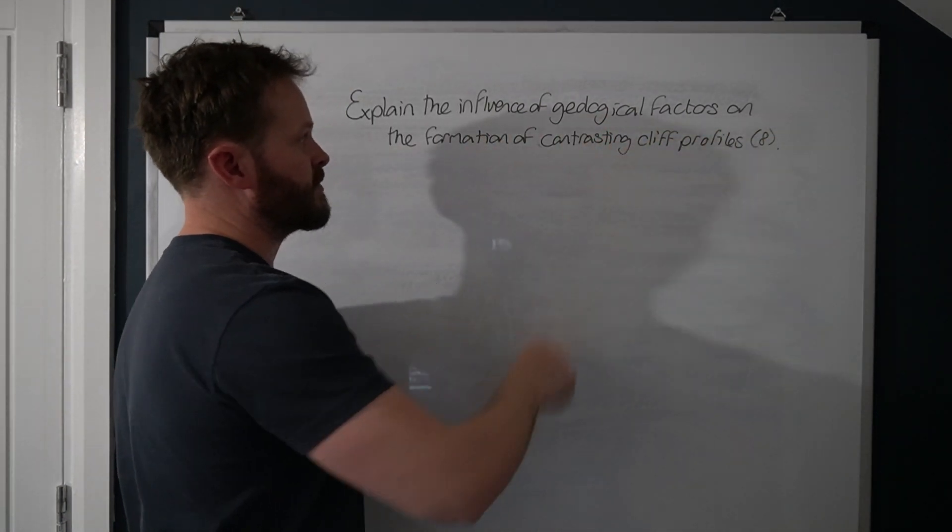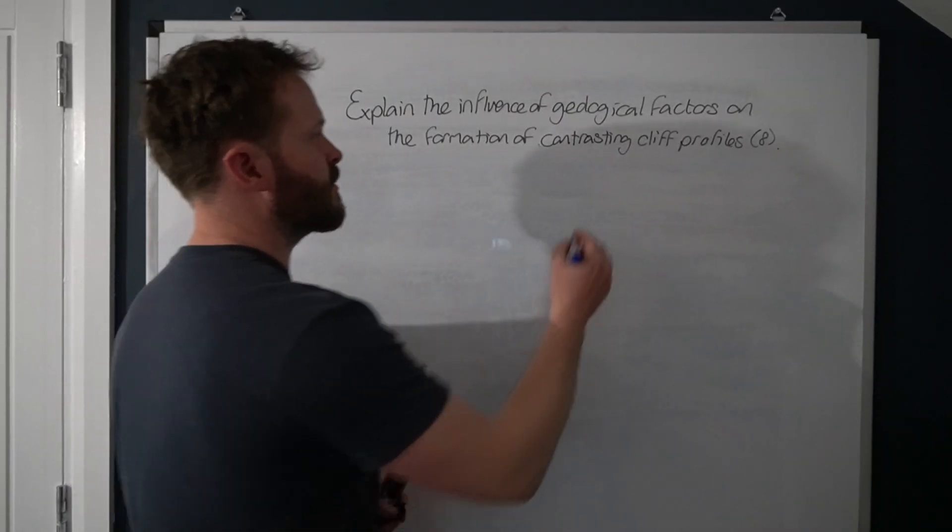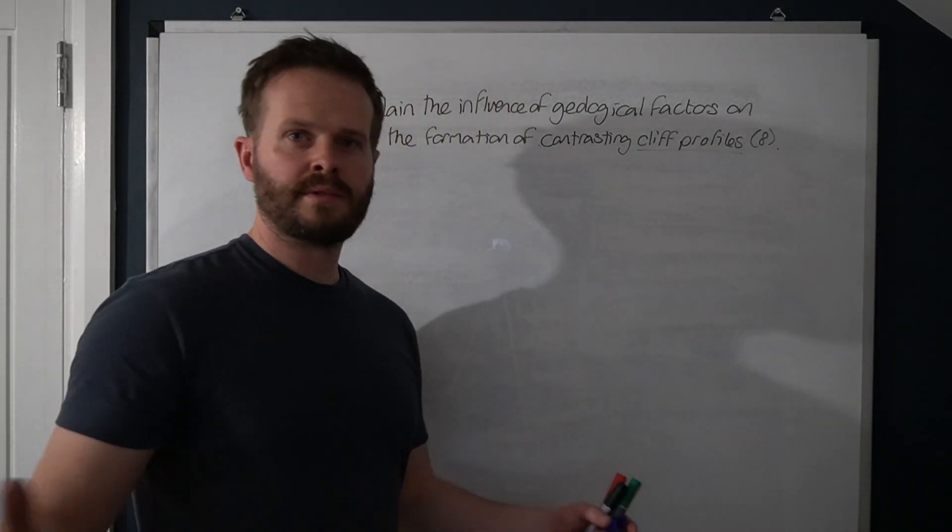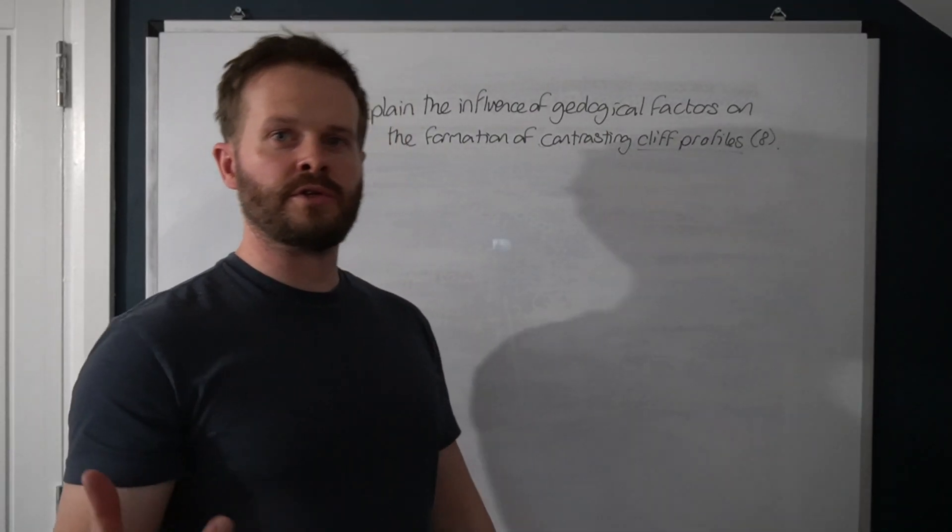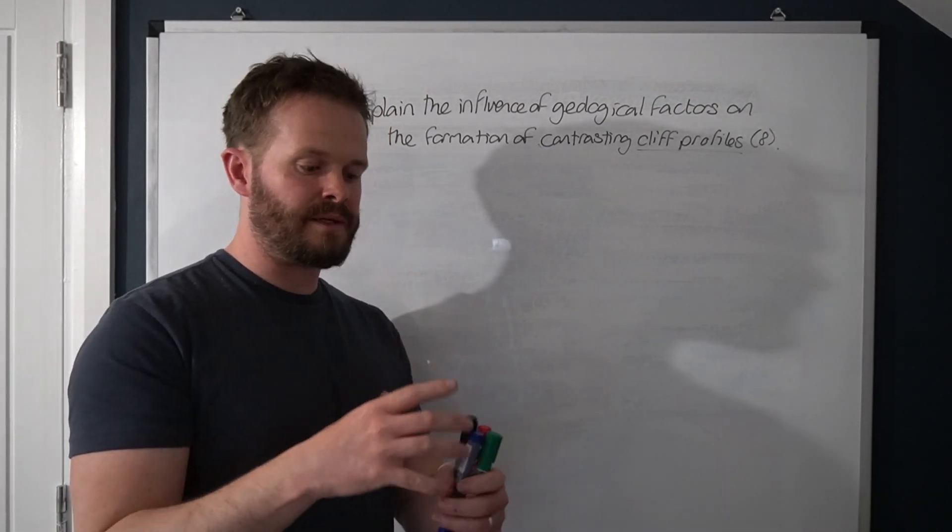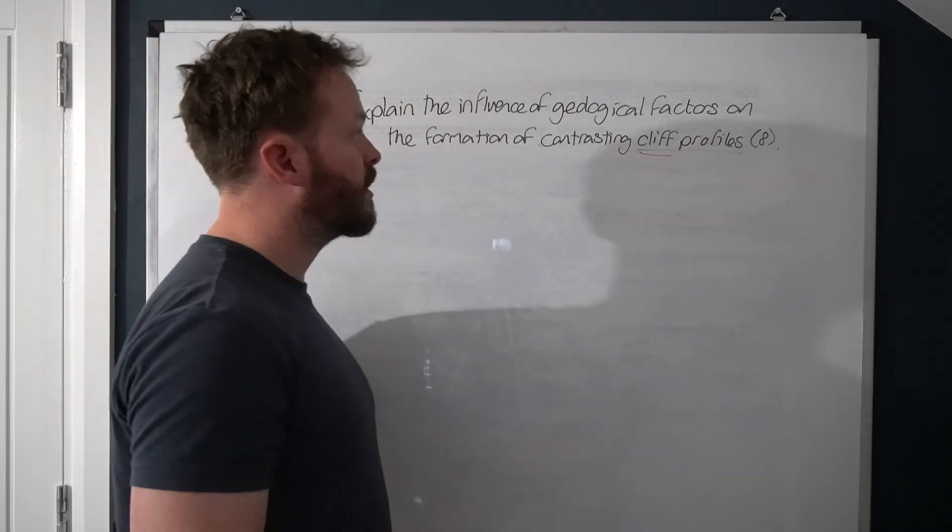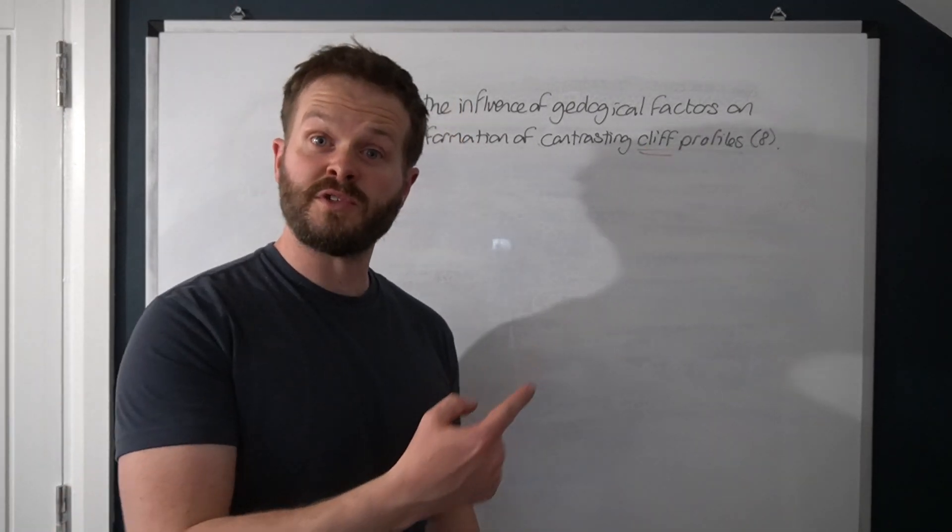Explain the influence of geological factors on the formation of contrasting cliff profiles. We need to fundamentally understand what do we mean by a cliff profile. Now this is something that a lot of students struggle with. They see the wording cliff profile in a question and they don't really exactly know what it means. They know what a cliff is. What a cliff profile? What exactly can we talk about in response to this question?